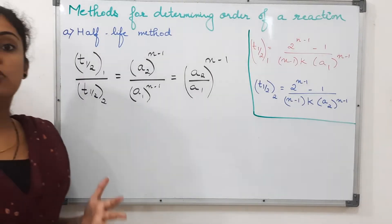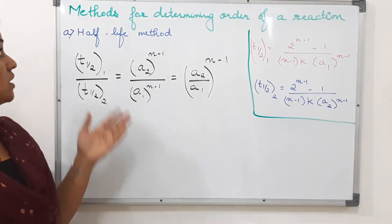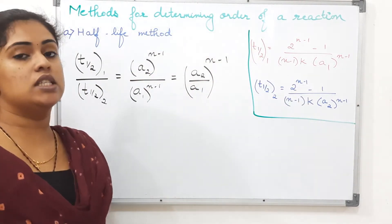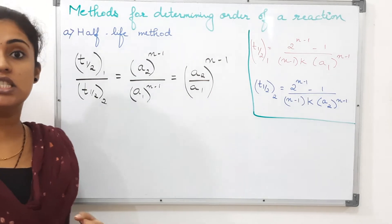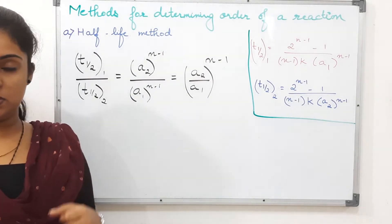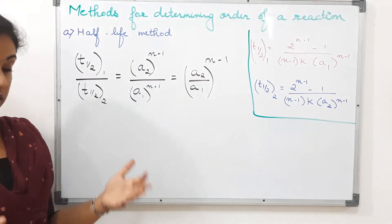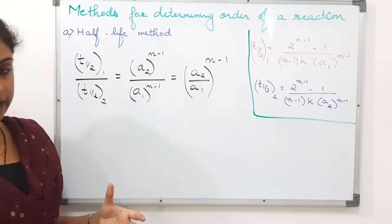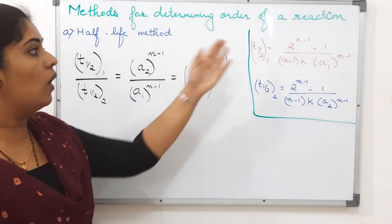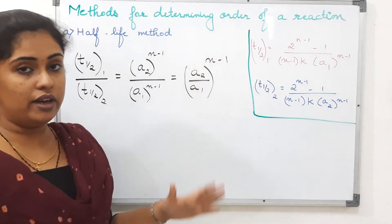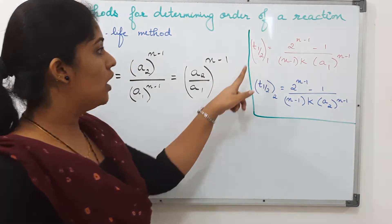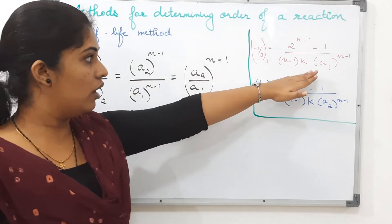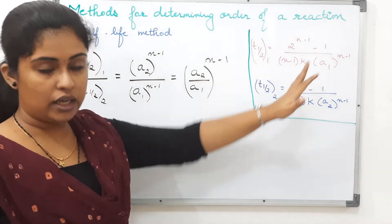Now let's move on to the next topic: certain methods for determining the order of a reaction. I will be discussing three different methods. The first one is using the half-life of a reaction, which is what we just learned, to predict the order of a reaction. We already saw that t-half has an equation of this form.